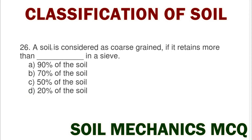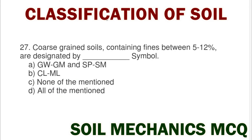Next question: a soil is considered as coarse grained if it retains more than what percentage in the sieve? Option A 90%, option B 70%, option C 50%, option D 20%. The correct answer is option C 50% of soil.